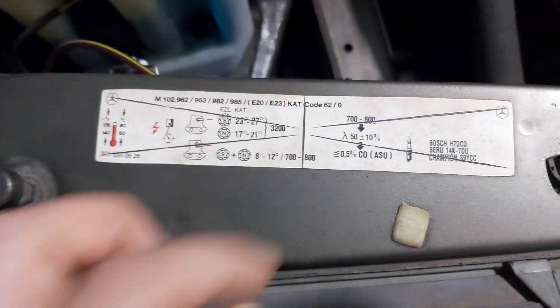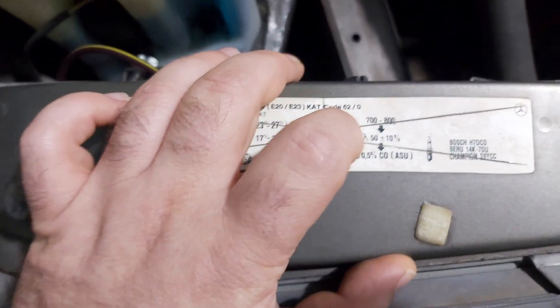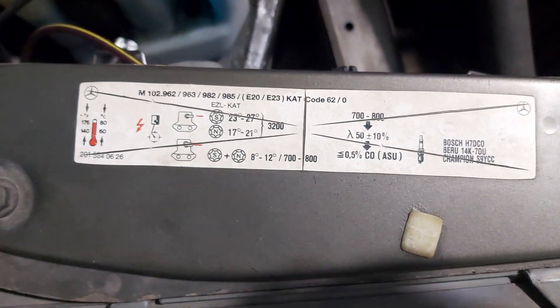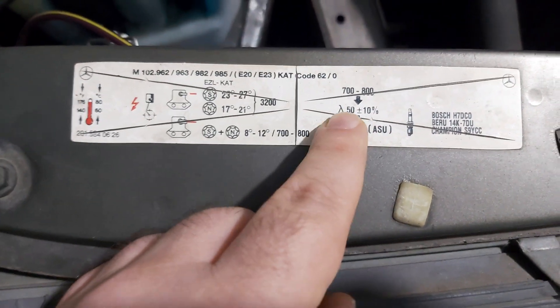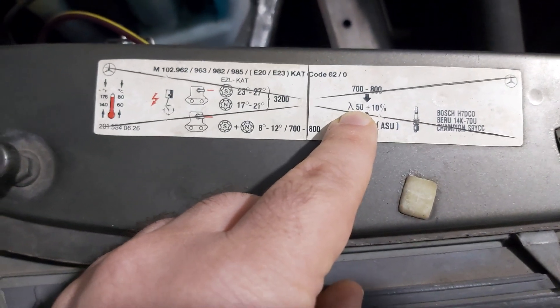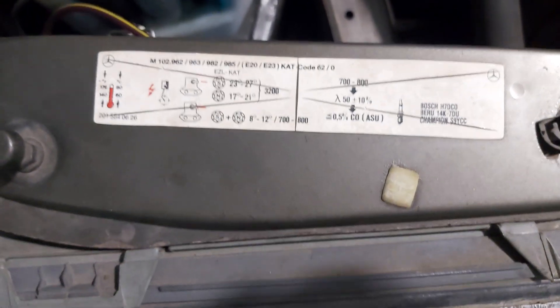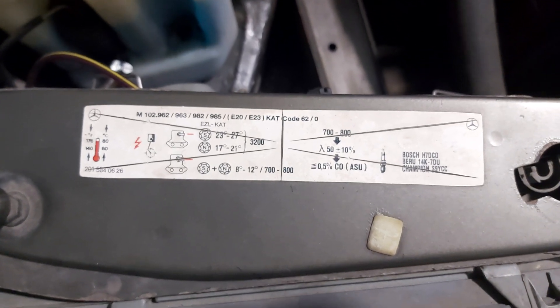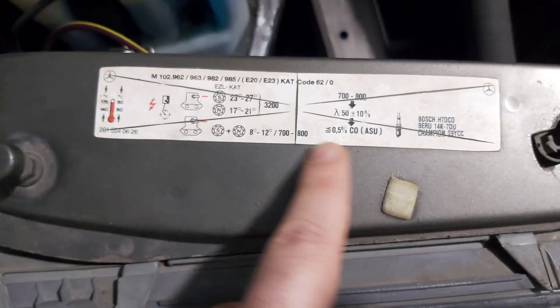This is also crucial - between 700 and 800 RPM, if you monitor the mixture in percents, it should be 50% plus minus 10%, which means 5.